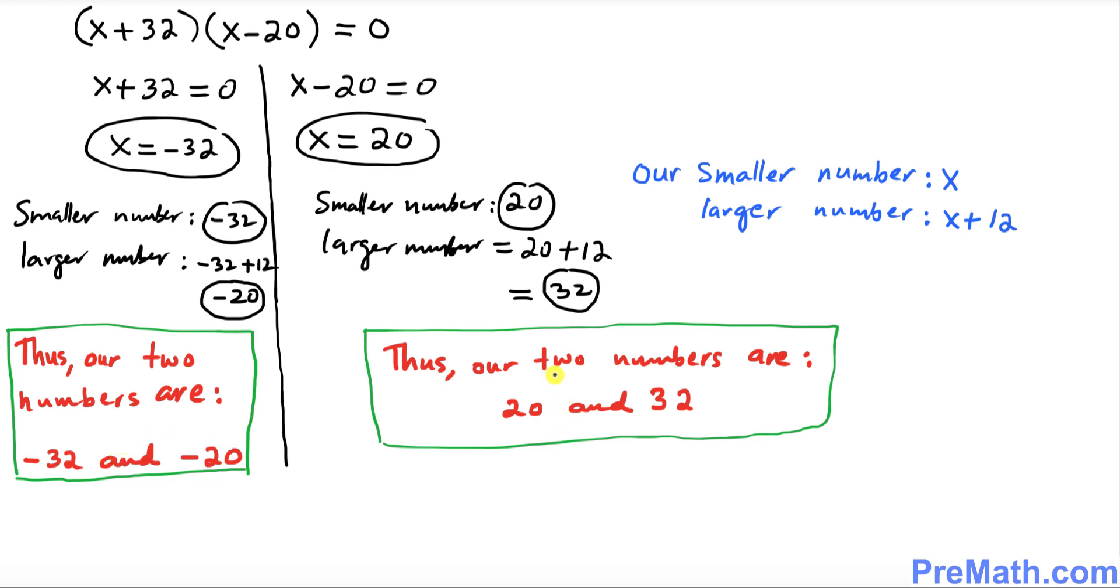And on the other side, the two numbers are 20 and 32. And obviously the difference is 12. And if you multiply them, you're going to get 640 as well. So these are our two answers.